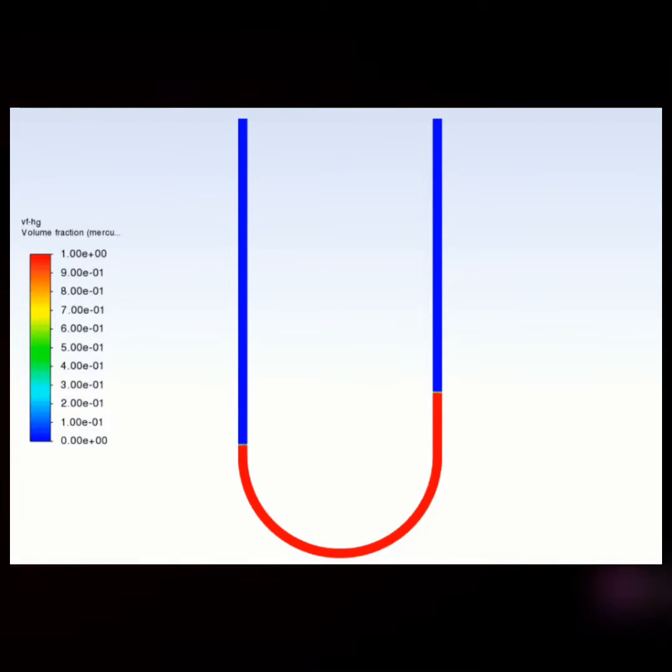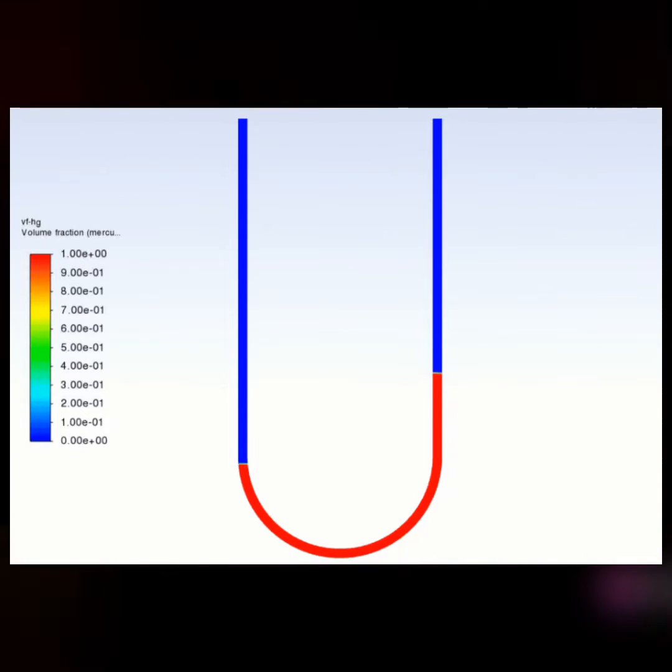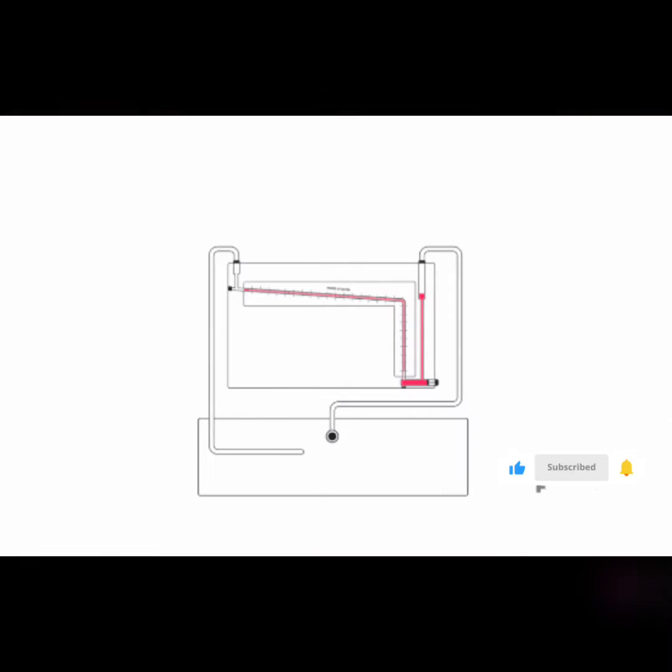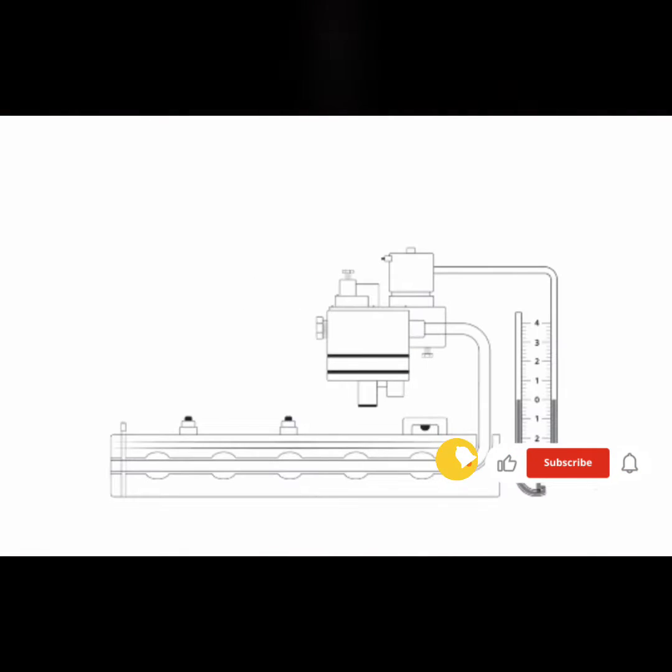First on the list are manometers. They work by comparing the pressure to a column of fluid, which could be either mercury or water. There are different types, including U-tube manometers, inclined manometers, and digital manometers.